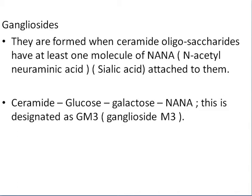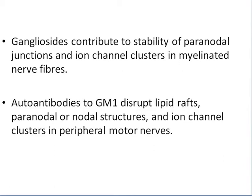Gangliosides are formed when ceramide oligosaccharides have at least one molecule of N-acetylneuraminic acid attached to them. Ceramide's glucose, galactose, and N-acetylneuraminic acid form the simplest ganglioside, GM3. Gangliosides contribute to stabilizing the paranodal junctions and ion channel clusters in myelinated nerve fibers. Autoantibodies against ganglioside GM1 disrupt lipid rafts, paranodal or nodal structure, and ion channel clusters in peripheral motor nodes.